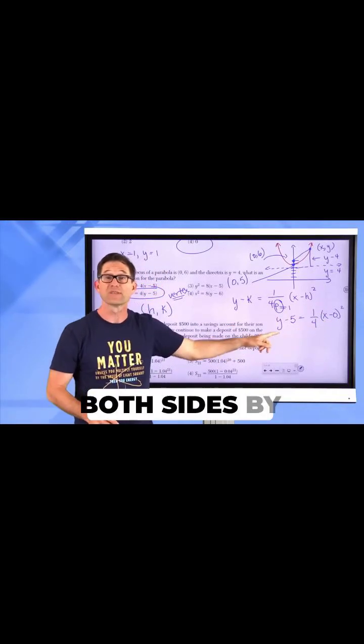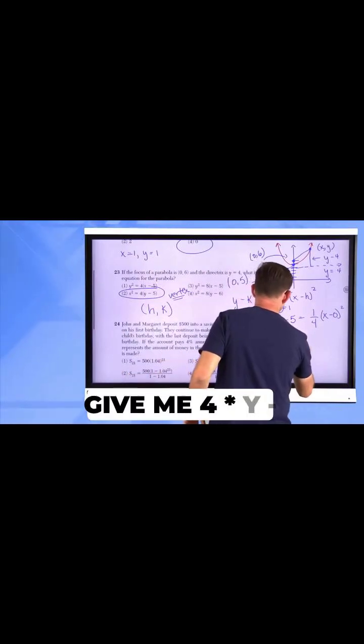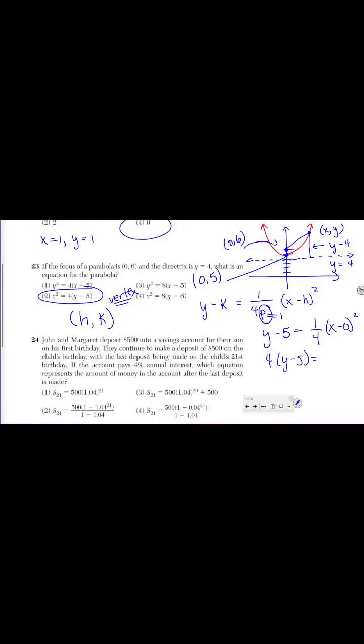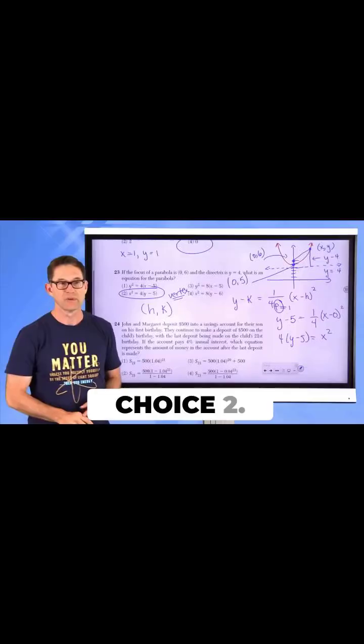Now I can multiply both sides by 4, and that would give me 4 times Y minus 5 is equal to X squared. Again, choice 2.